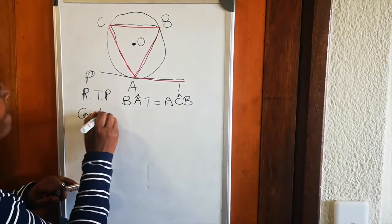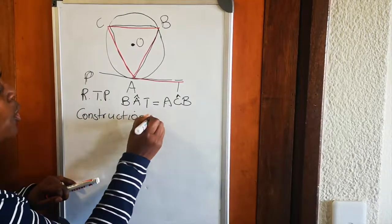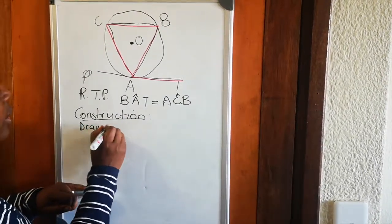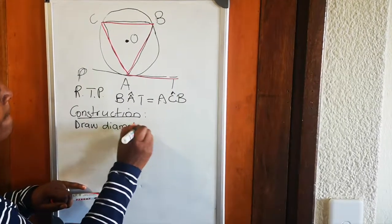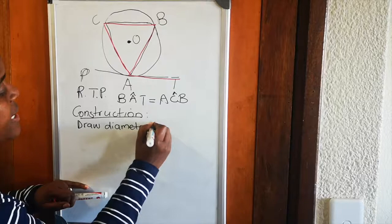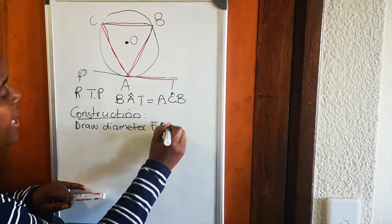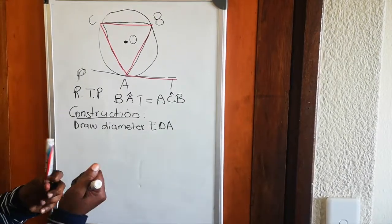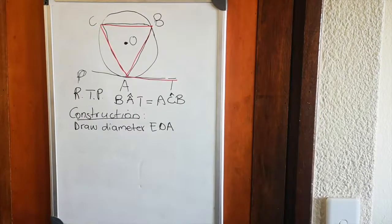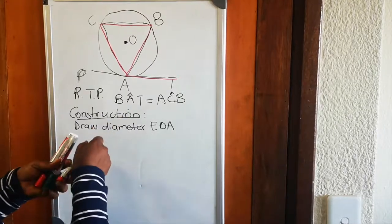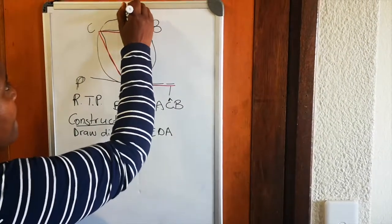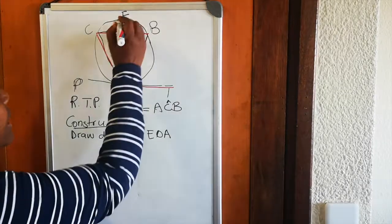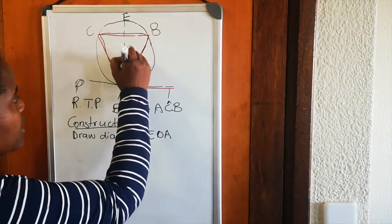Now we do our construction. No construction means no marks, and wrong construction also means no marks. In this theorem, you're going to draw diameter E-O-A. A diameter is a line that crosses through the center of the circle from one side of the circumference through the center to the other side. So we draw E, then the diameter as a dotted line through the center to A.